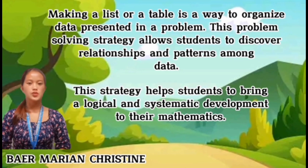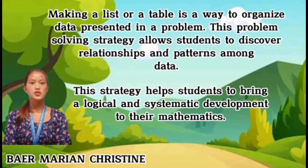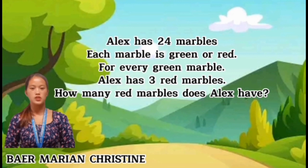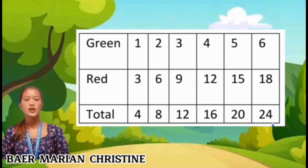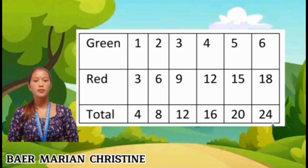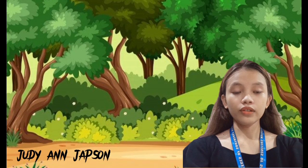Making a list or table is a way to organize data presented in a problem. This problem solving strategy allows students to discover relationships and patterns among data and helps bring logical and systematic development to their mathematics. The problem: Alex has 24 marbles — each marble is green or red. For every green marble, Alex has three red marbles. How many red marbles does Alex have? Using a chart with columns for green, red, and total: every green marble count goes up by one, red goes up by three, and the total goes up by four, until the total reaches 24.